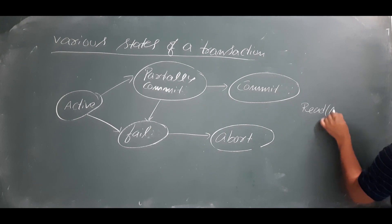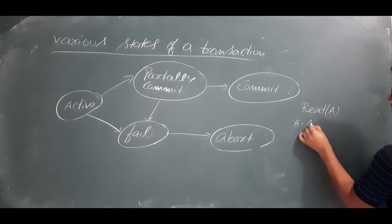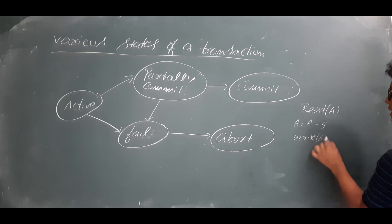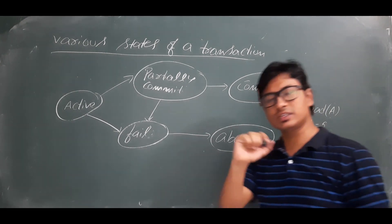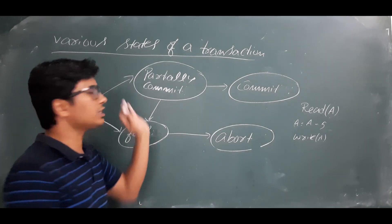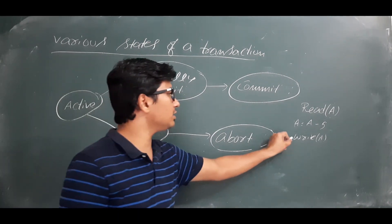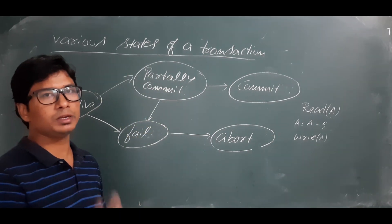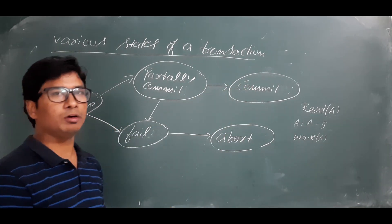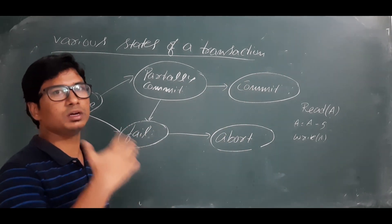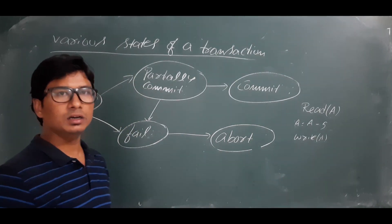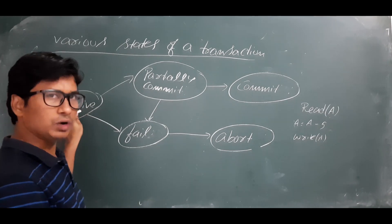As discussed in the earlier video: read A, A = A - 5, write A. Now when we write A, it is saved — but partially committed means it will be stored in memory only, not updated in the database. If we perform a commit operation — if the transaction goes to the committed state — then it will be permanently stored in the database.